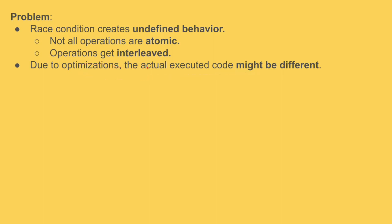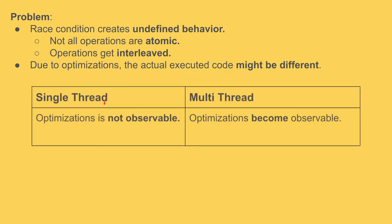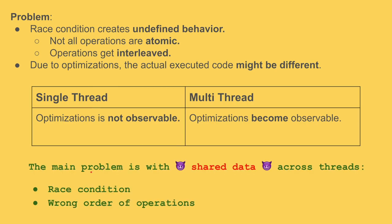In single-threaded programming, compiler, CPU, and cache optimizations are not observable. But in multi-threading, optimizations become observable. Remember that the main problem happens because we have shared data — race conditions, non-atomic operations — they all happen because you're trying to access shared data from multiple threads. This is the mother of all evils, causing race conditions and wrong order of operations.